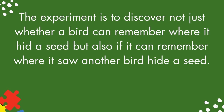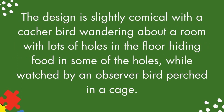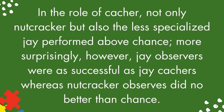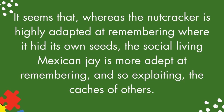The experiment was designed to discover not just whether a bird can remember where it hid a seed, but also if it can remember where it saw another bird hide a seed. The design is slightly comical, with a cacher bird wandering about a room with lots of holes in the floor hiding food in some of the holes, while watched by an observer bird perched in a cage. Two days later, cachers and observers are tested for their discovery rate against an estimated random performance. In the role of cacher, not only the Nutcracker but also the less specialized Jay performed above chance. More surprisingly, however, Jay observers were as successful as Jay cachers, whereas Nutcracker observers did no better than chance. It seems that whereas the Nutcracker is highly adapted at remembering where it hid its own seeds, the social-living Mexican Jay is more adept at remembering, and so exploiting, the caches of others.